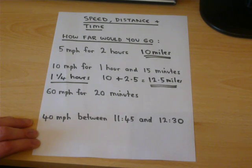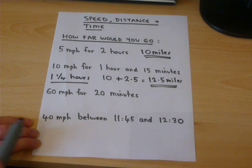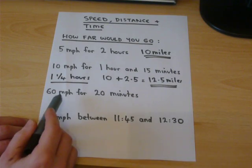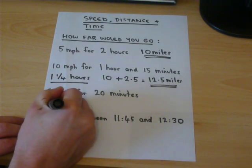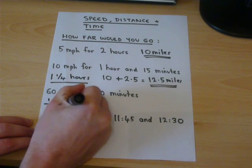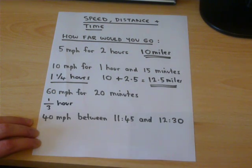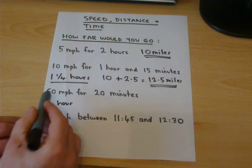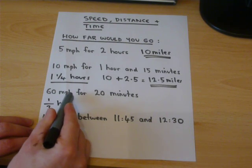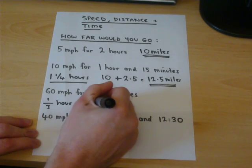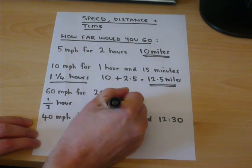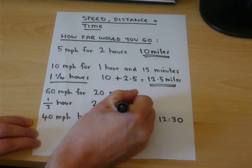The same sort of method applies in the next example where he travels for only 20 minutes but the speed is in miles per hour. Now 20 minutes is a third of an hour. So if he does 60 miles in one hour, in a third of an hour he will do a third of that — therefore he will only travel 20 miles.